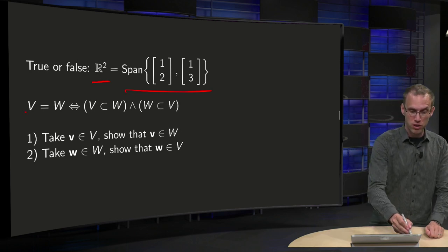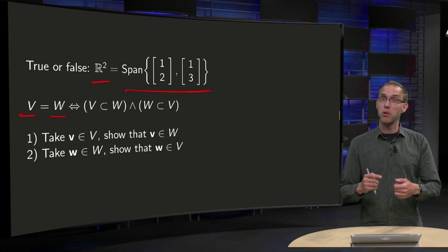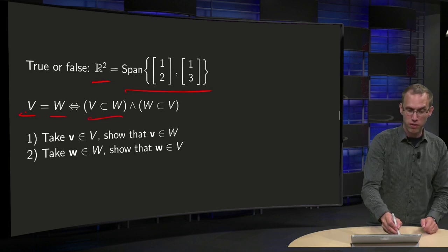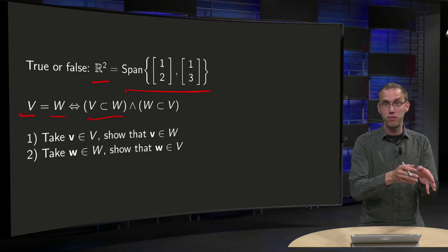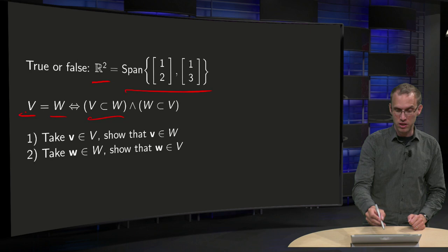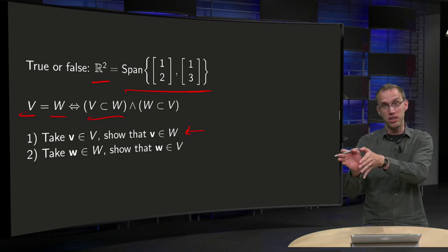If you want to show that the set V equals the set W, then you have to show two things. You have to show that V is a subset of W, so that means all elements of V are also in W. That's this statement over here. Take any v in V and show that it is in W as well.